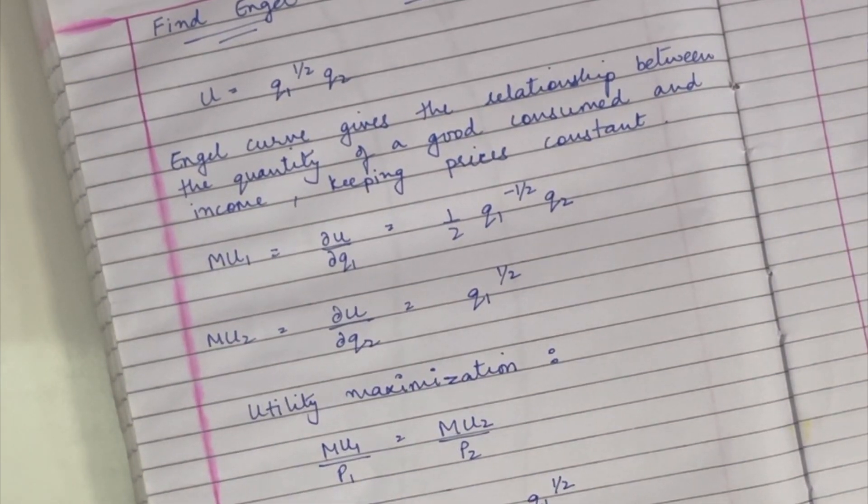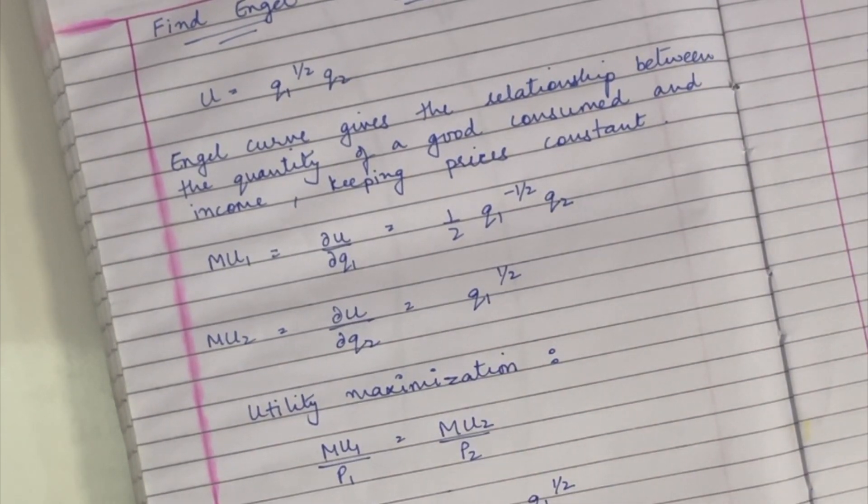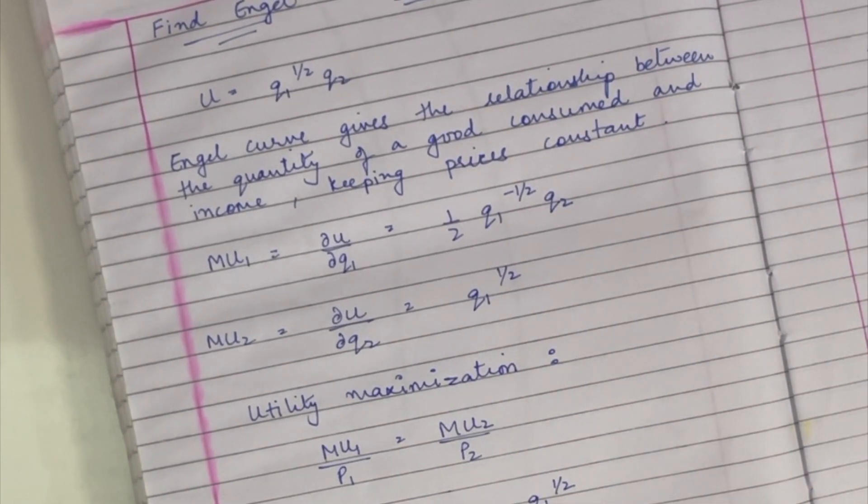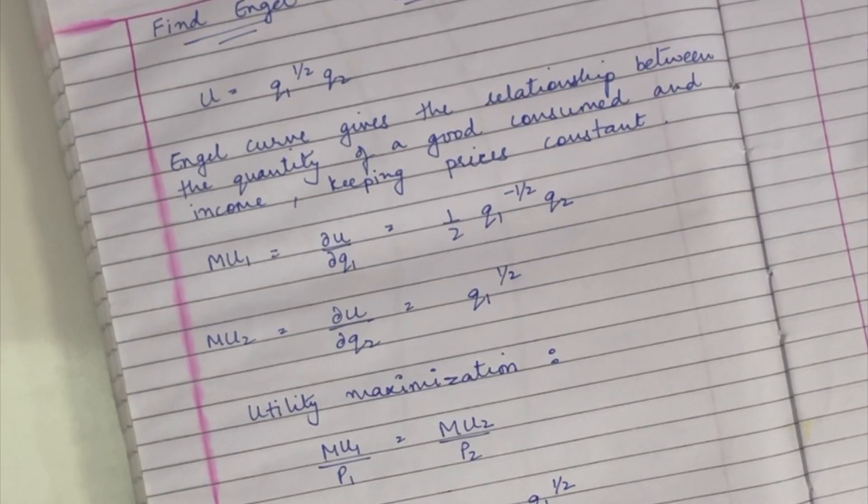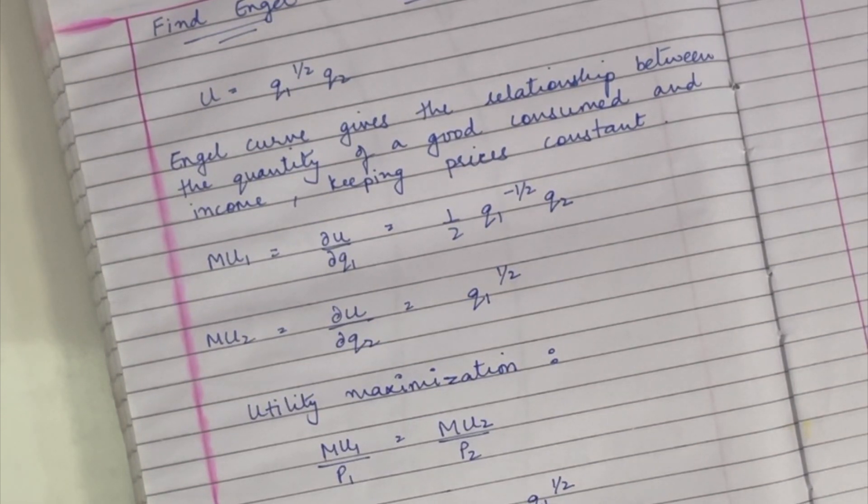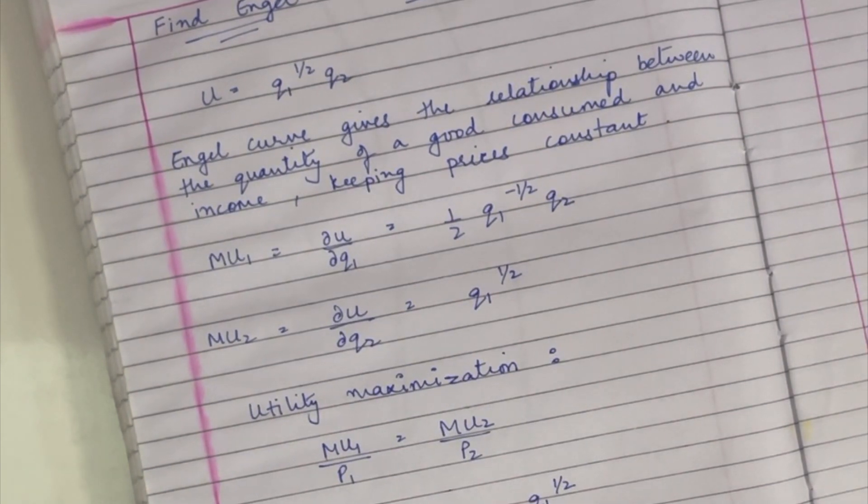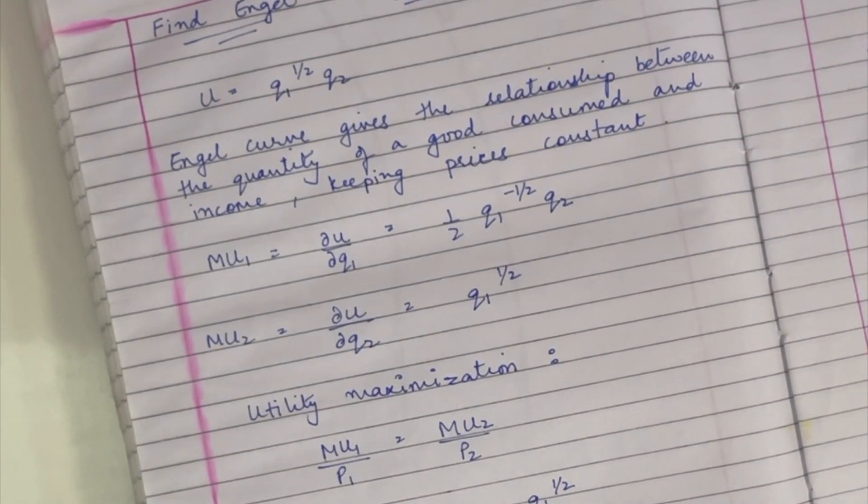Now I just take this two to the other side. I get p2 q1 minus half q2 equals 2 p1 q1 half. Solving for q2, I get 2 p1 q1 half.